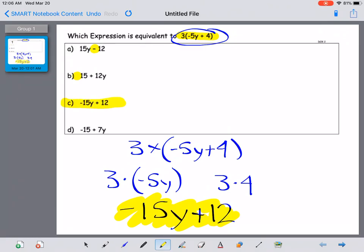Okay, this is the correct one. See? It matches. Right? And here, they simply added the 3. If you notice, they added the 3 and the 4, and that's not what you're supposed to do. So the correct answer is negative 15y plus 12.